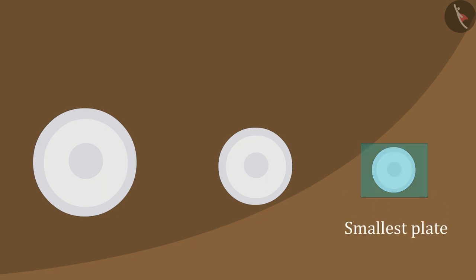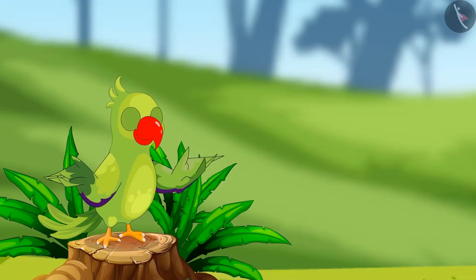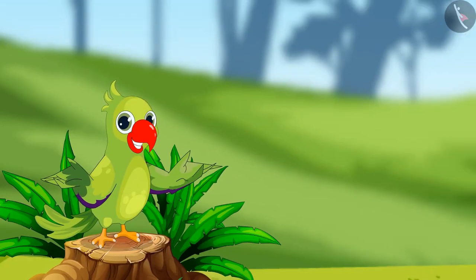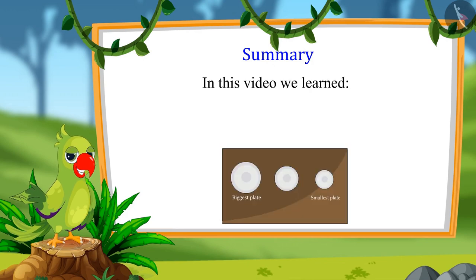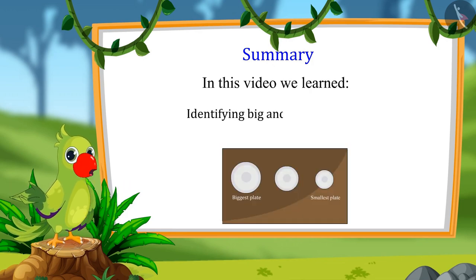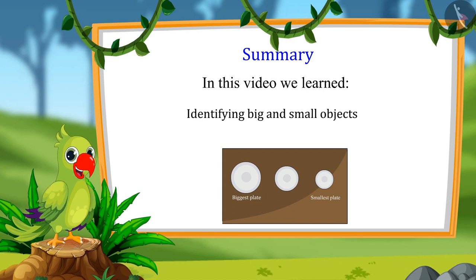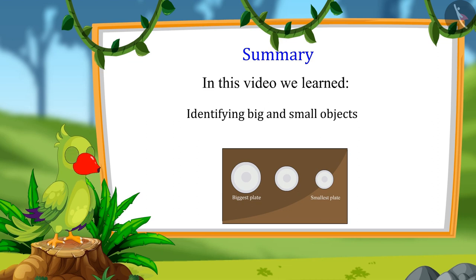Children, did you see? This is the smallest plate among these three plates, and this is the largest plate. So hey kids, that's it for today! In this video we learned to identify big and small objects, and I really hope you understood this topic properly. Okay then, bye kids!